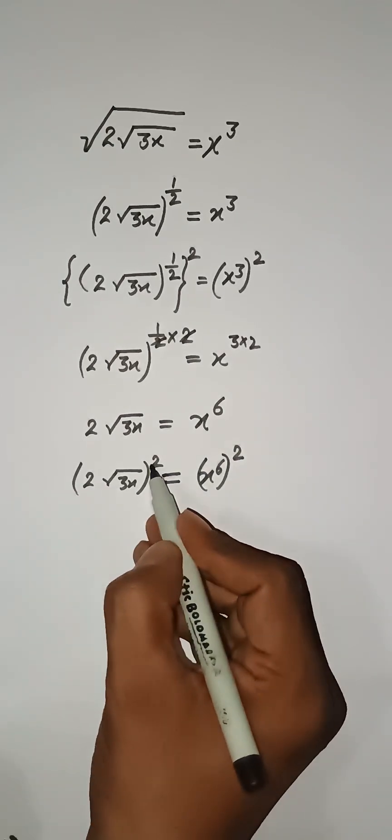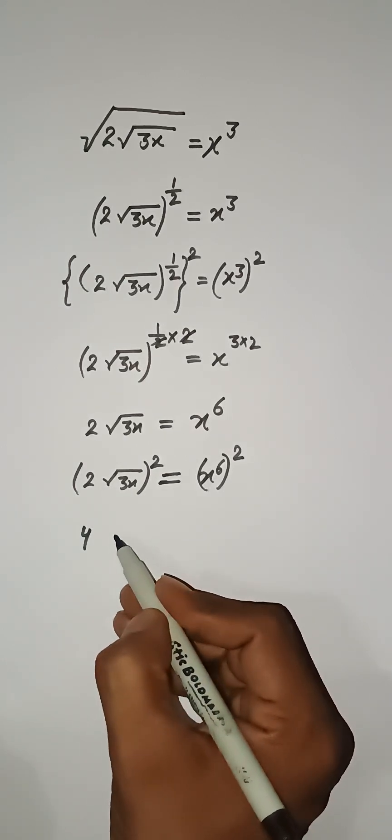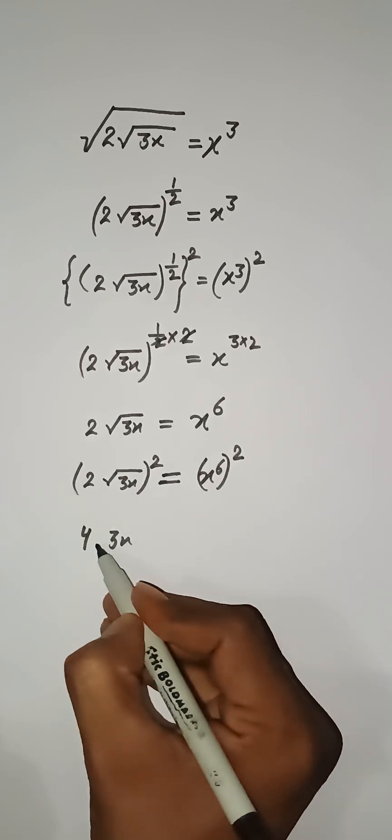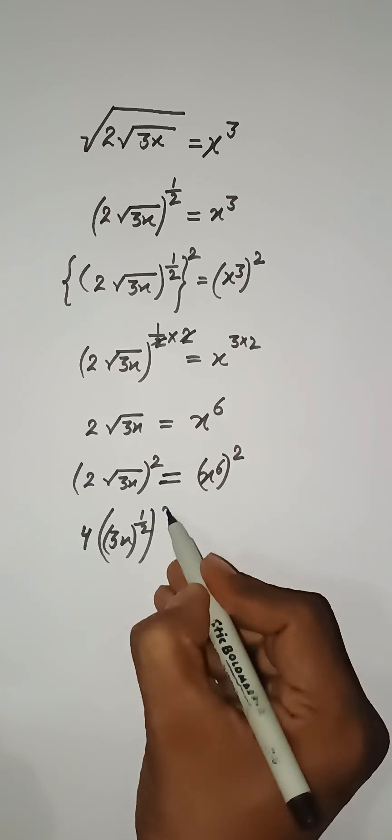Now this 2 is having power 2, so 2 to the power 4, and this square root will be written in this form: 3x power 1/2, and this square root is here.